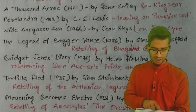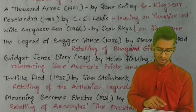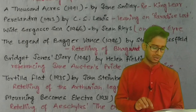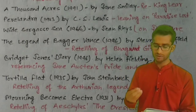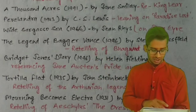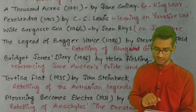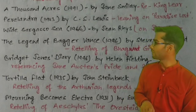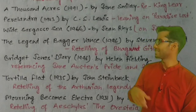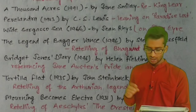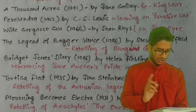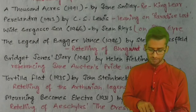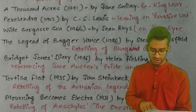'Perelandra' (1943) by C.S. Lewis, which was inspired by or leaning on 'Paradise Lost' by Milton. And 'Wide Sargasso Sea' (1966) by Jean Rhys, which was a retelling of, or leaning on, 'Jane Eyre'.